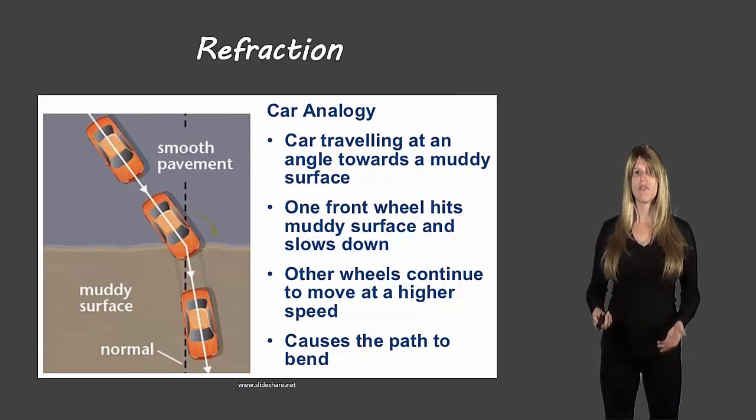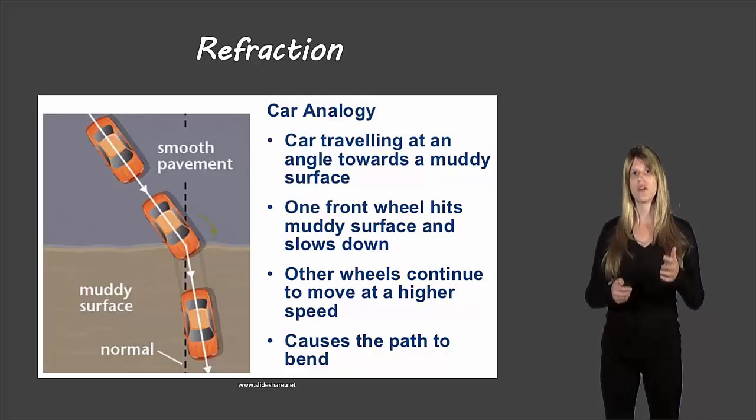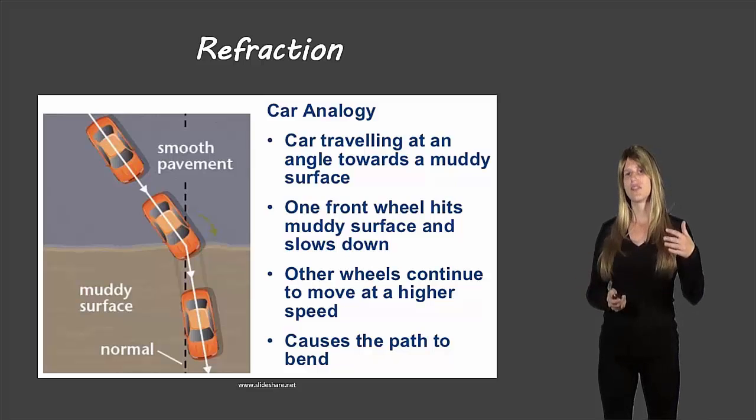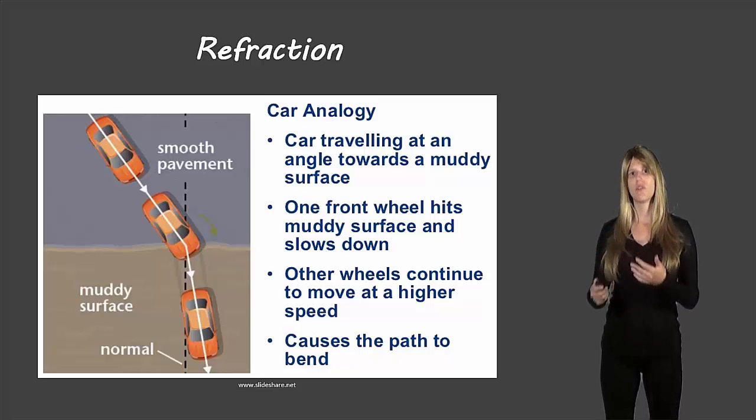So a great analogy for how refraction works is if you think of a car. Imagine a car is on a paved road and then it travels towards a muddy surface. Now normally a car can travel a lot more easily on a paved road and it's much slower on the muddy surface. If the car goes towards the muddy surface at an angle, so it's not going straight on where both tires are on the paved road and then both hit the muddy surface at the same time, that won't work. But if it's coming at an angle where one wheel hits the muddy surface or one tire hits the muddy surface before the other, then refraction or something similar to refraction will occur.